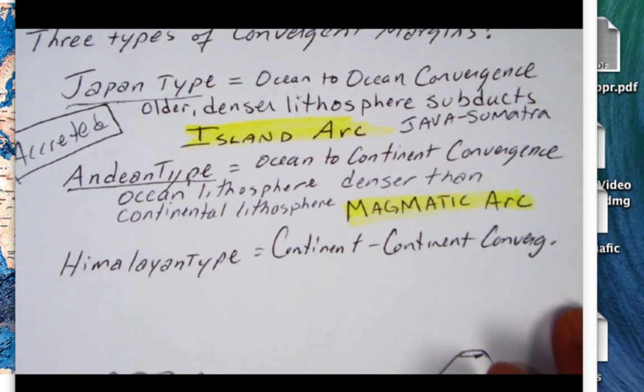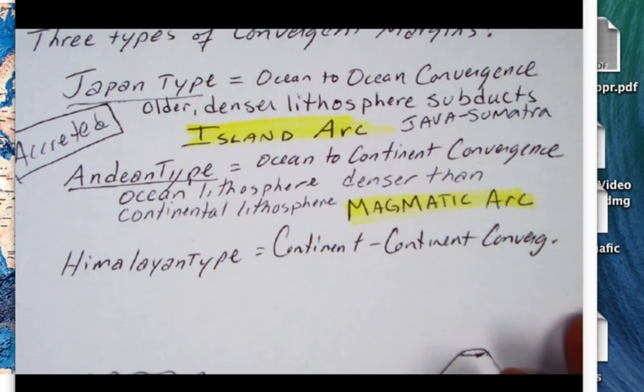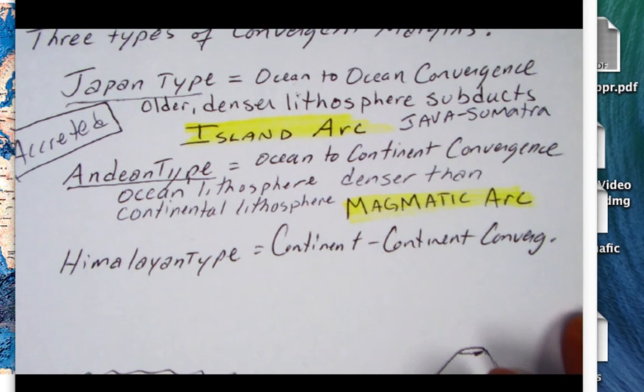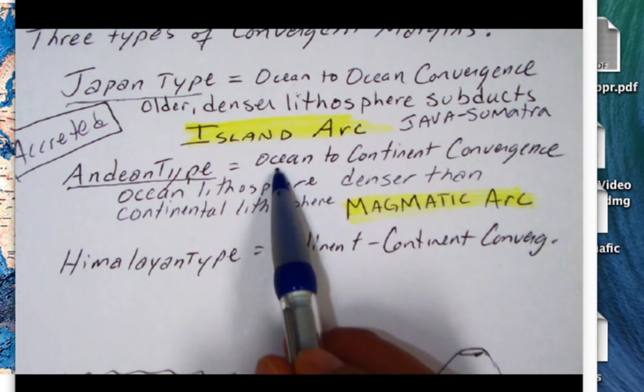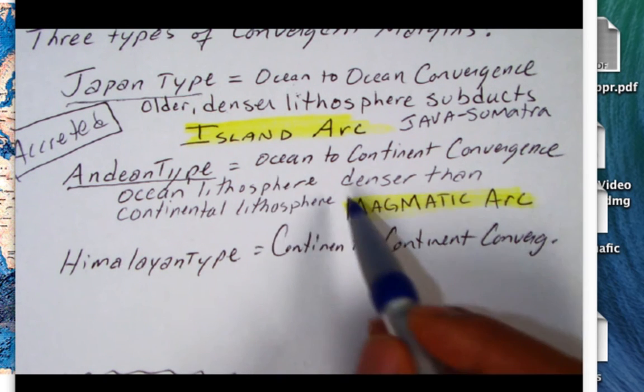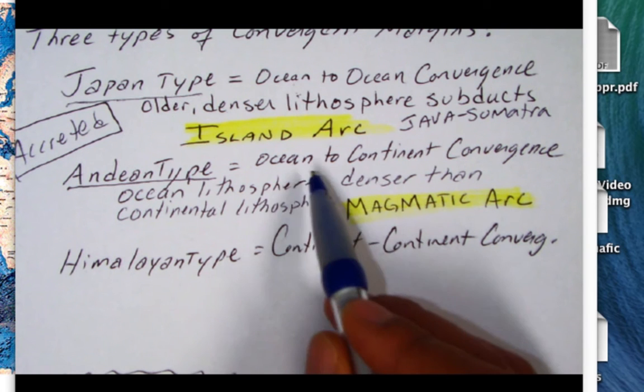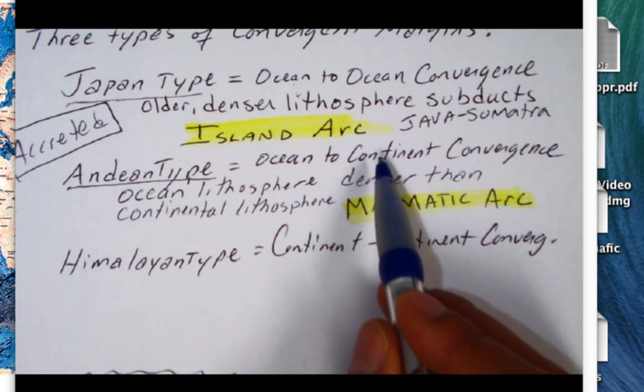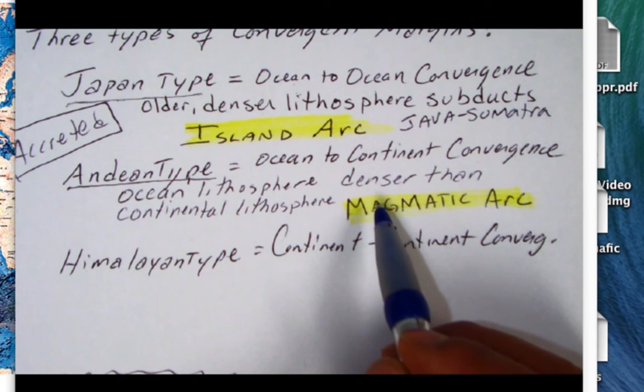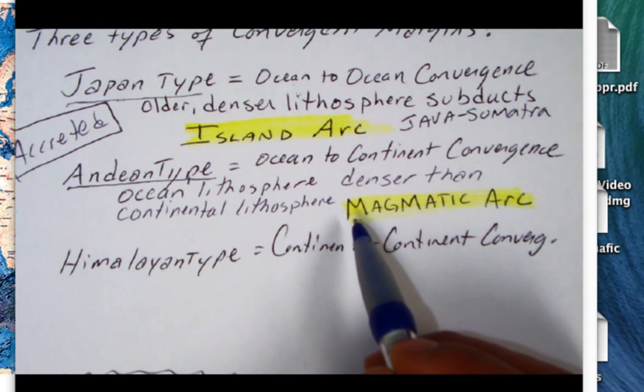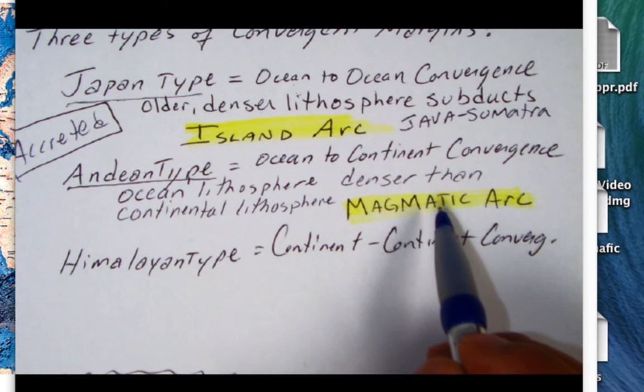For the second type of convergent margin, the Andean type of margin, like the Andes Mountains, here there's an oceanic plate called the Nazca plate which is being subducted under South America. So this is an ocean-to-continent convergent margin. The volcanoes, rather than being islands, are going to be on continents, and we call this arc a magmatic arc.